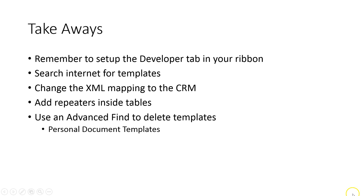Here are the key takeaways. Always set up the Developer tab in your ribbon. Search the Internet for templates via File > New in Word. Change the XML mapping to CRM — if you don't, you won't find any fields. Add repeating content controls inside your tables for anything with more than one record, like lines on a quote or sales order. Use Advanced Find to delete templates, searching for Personal Document Templates. Finally, it takes about 10 to 20 minutes to build a report, so have patience, and use Bing or Google to search for any issues you encounter. Thanks very much and look forward to seeing you next time.